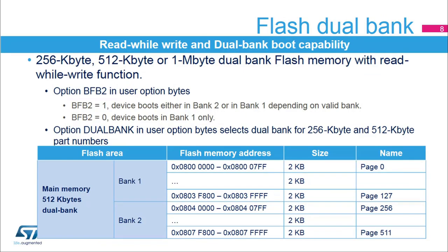The flash is dual bank memory with read-while-write and dual bank boot capability, able to boot from either bank 1 or bank 2. The BFB2 option in the user option bytes is used to select the dual bank boot mode. When the BFB2 option is set, the device boots in either bank 1 or bank 2, depending on the valid bank. When the BFB2 option is cleared, the device always boots from bank 1.